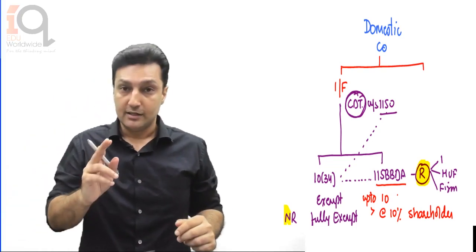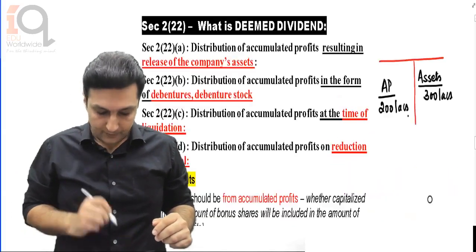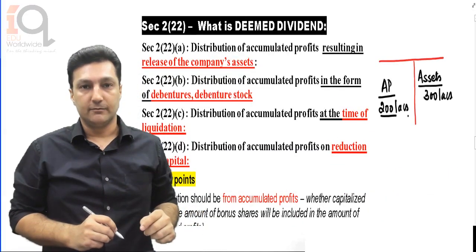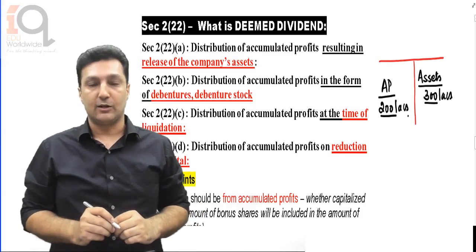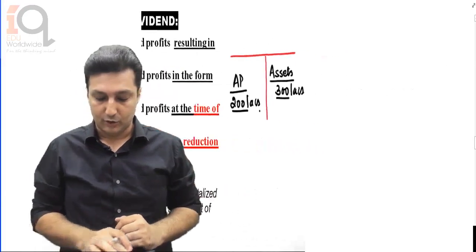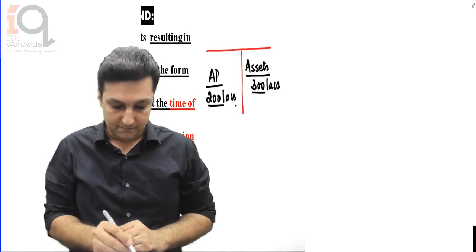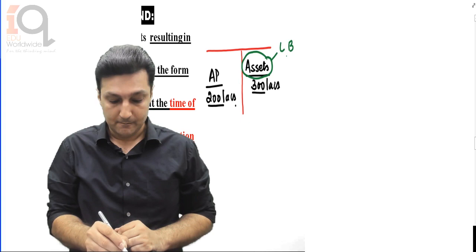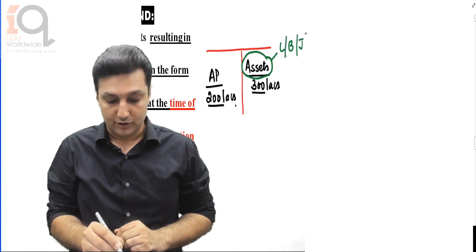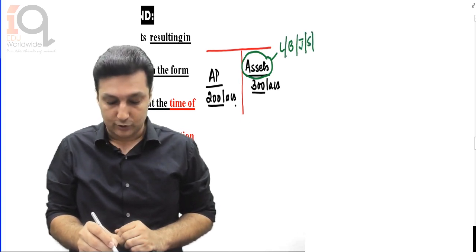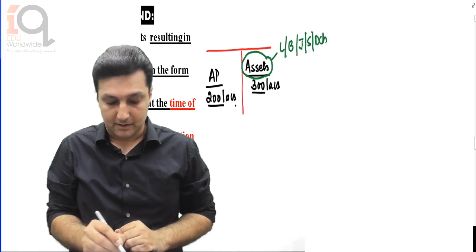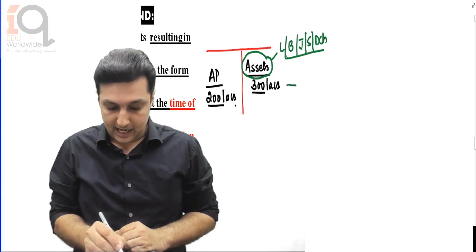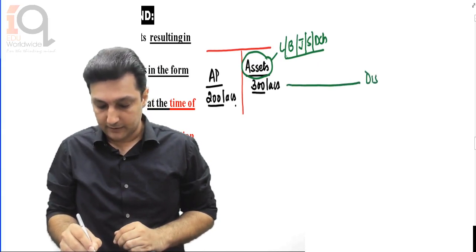Now, what certain companies started doing was - suppose a company has accumulated profits of 2 crore and assets worth 3 crore. The company tells shareholders: I'm not giving you cash. Instead, I'll distribute these assets - which could be land, building, investments in jewelry, shares, debentures of some other company - as a distribution.